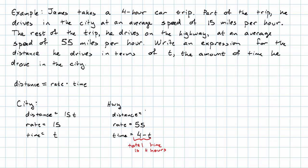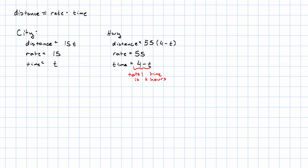So then the distance he travels on the highway is again rate times time. Now we kind of have an idea of what to do. He drives 15t miles in the city, and then 55 times four minus t miles on the highway. His total distance is going to be how far he drove in the city plus how far he drove on the highway. His distance in the city was 15t, and his distance on the highway was 55 times four minus t.